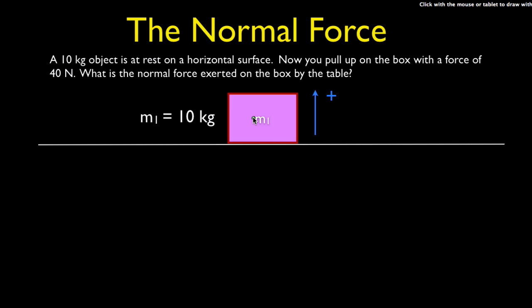Now we have the same general situation — a 10-kilogram box on the table — but this time the box is being pulled up with a force of 40 Newtons. The weight of the object is 98 Newtons and the applied force upward is 40 Newtons. Since the applied force is less than the weight, the object is not being lifted off, so there is still a normal force acting on the box.